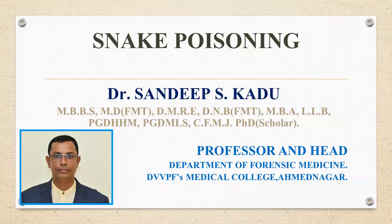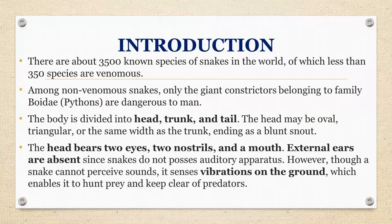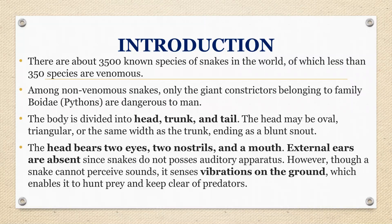There are about 3,500 known species of snake all over the world. Remember that only 350 species are venomous worldwide. But in India, only 4 to 5 species are poisonous — all others are non-poisonous. So remember that most of the snakes are non-venomous.